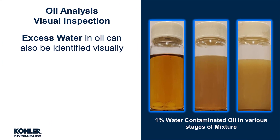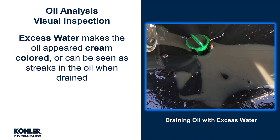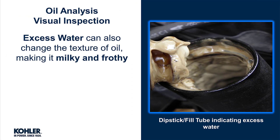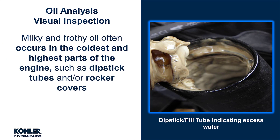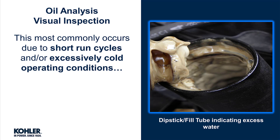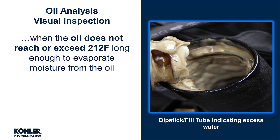Excess water in oil can also be identified visually. The pictures here illustrate 1% water contamination in various stages of mixture. Water can make the oil cream colored or may be seen as streaks in the oil when drained. It can also change the texture of oil, making it milky and frothy — more like mayonnaise than oil. Oil froth often occurs in the coldest and highest parts of the engine, such as dipstick tubes and rocker covers. The most common cause is short run cycles or excessively cold operating conditions when the oil does not reach or exceed 212 degrees long enough to evaporate moisture from the oil.